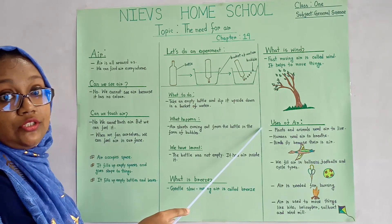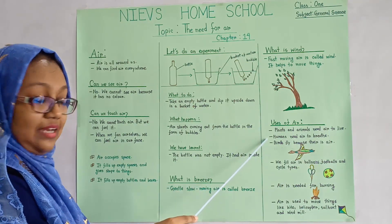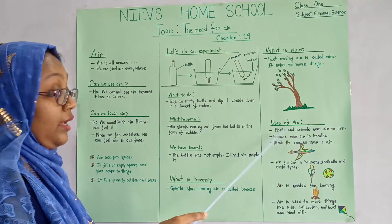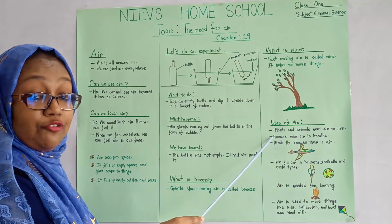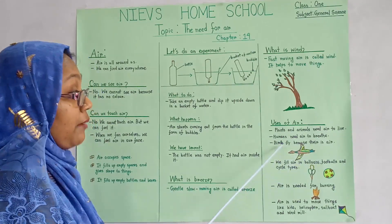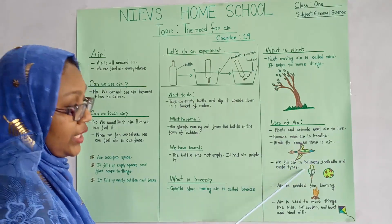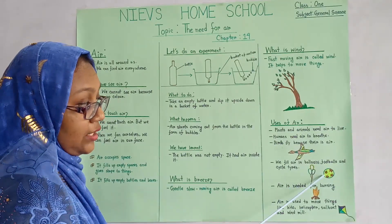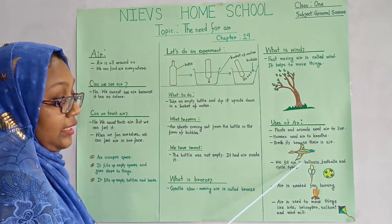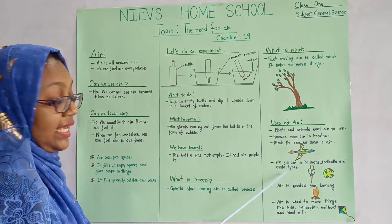There are lots of uses of air. Let's learn the uses of air. Plants and animals need air to live. Humans need air for breathing. Look here, there is a bird — birds fly because there is air. Look here, there are some balloons and a football. We feel air in balloons, footballs, and cycle tires.